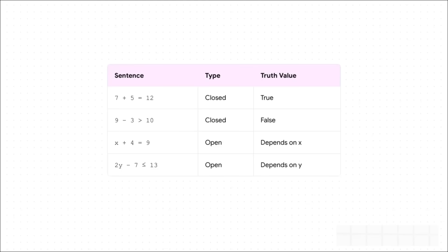Let's break this down with some real examples. Take the sentence, seven plus five equals 12. We call that a closed sentence because there are no variables, no mystery. And its truth value, well, it's true. Easy peasy. Now look at nine minus three greater than 10. This is also a closed sentence, but this time it's false, right? Six is definitely not greater than 10.